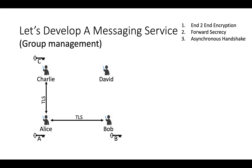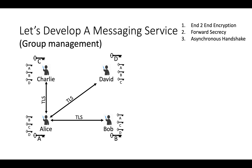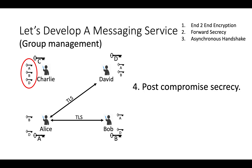Now David wants to join the group. David comes up with his own sender key D and exchanges it with everyone. David has keys for Alice, Bob, and Charlie, and everyone has David's key. After some time, everyone decides to remove Charlie from the group. The server removes his entry from the group list, so messages no longer reach Charlie. But Charlie still has the sender keys of everyone, which means if he can capture network packets, he can decrypt all group conversations. This is our fourth problem statement: post-compromise secrecy.